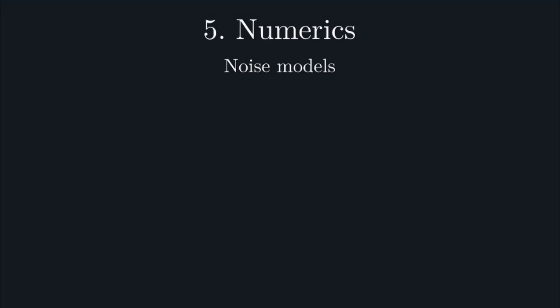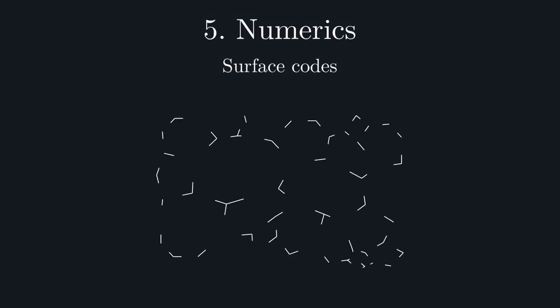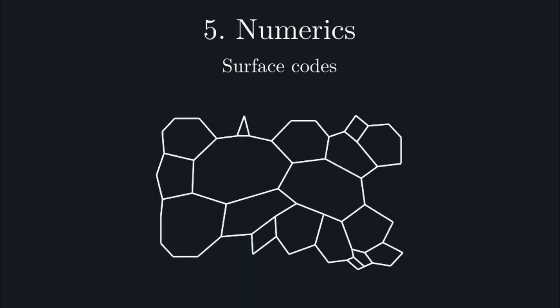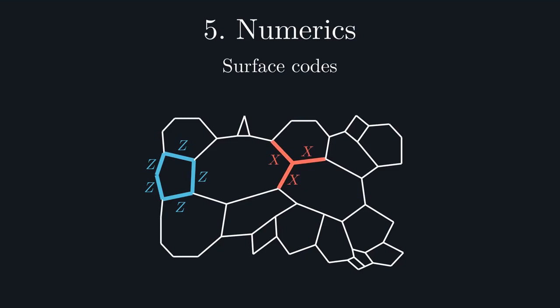Okay, so now onto the codes. The main class of codes we're going to consider are surface codes. These are generalizations of the Toric code defined on any planar graph. Specifically, these are codes with qubits on the edges of such a graph, with Z-type stabilizers residing on the faces, and X-type on the vertices.